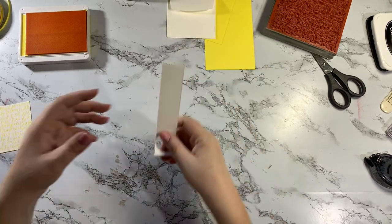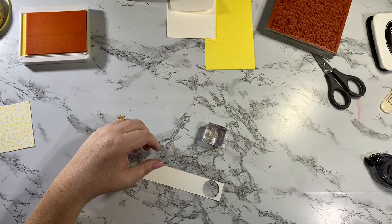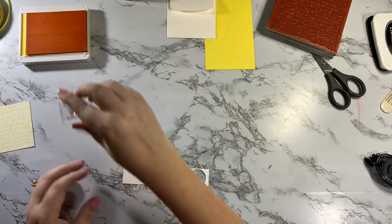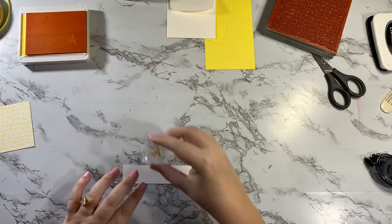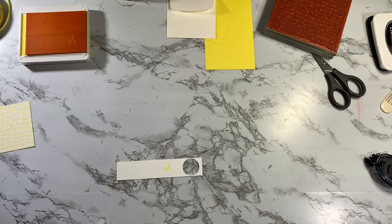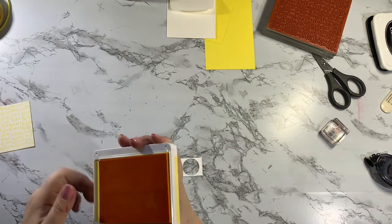Alright, then I have a scrap piece of whisper white cardstock here and I just grabbed the A from the Make a Difference stamp set. The capital A for Amy, that's me. You could do any letter you want and I'm just gonna stamp that right there in the pineapple punch. Okay, and that's actually all the stamping.